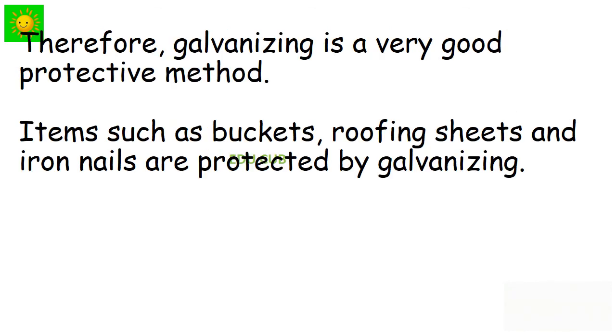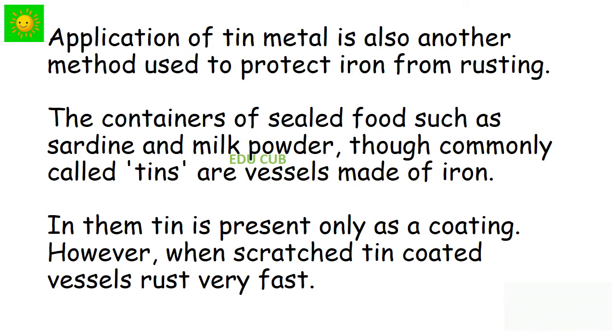Therefore galvanizing is a very good protective method. Items such as buckets, roofing sheets, and iron nails are protected by galvanizing. Application of tin metal is also another method used to protect iron from rusting.